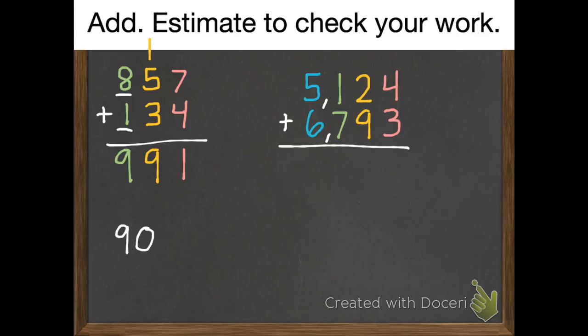And to check our work, we get nine hundred plus one hundred, which is one thousand, which is very close to nine hundred ninety-one.